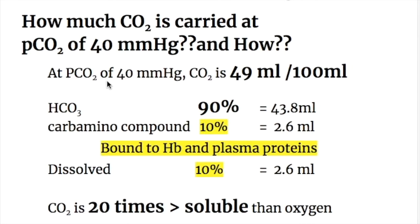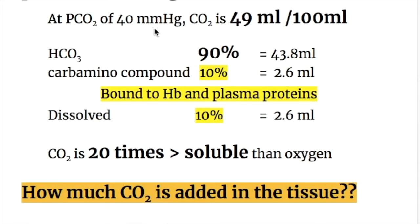How much carbon dioxide is carried at a PCO2 of 40 mmHg in arterial blood? At a PCO2 of 40 mmHg, carbon dioxide content is 49 ml per 100 ml. The breakdown is as follows: 90% is carried as bicarbonate, making 43.8 ml; 10% each is carried as carbamino compound and in dissolved state, that is 2.6 ml each. Carbamino compounds are carried bound to hemoglobin and plasma proteins.